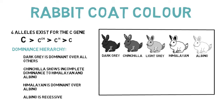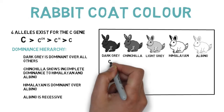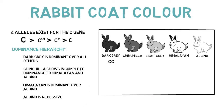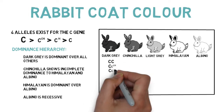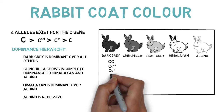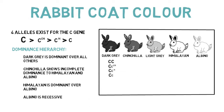Now that we know the dominance hierarchy, let's work through all the possible genotypes for these five color phenotypes. Dark gray rabbits can have the following genotypes: capital C capital C, capital C lowercase cch, capital C lowercase ch, and capital C lowercase c. What do all of these genotypes have in common? They all have the capital C allele. So in order for a rabbit to have the dark gray phenotype, they must have the capital C allele.